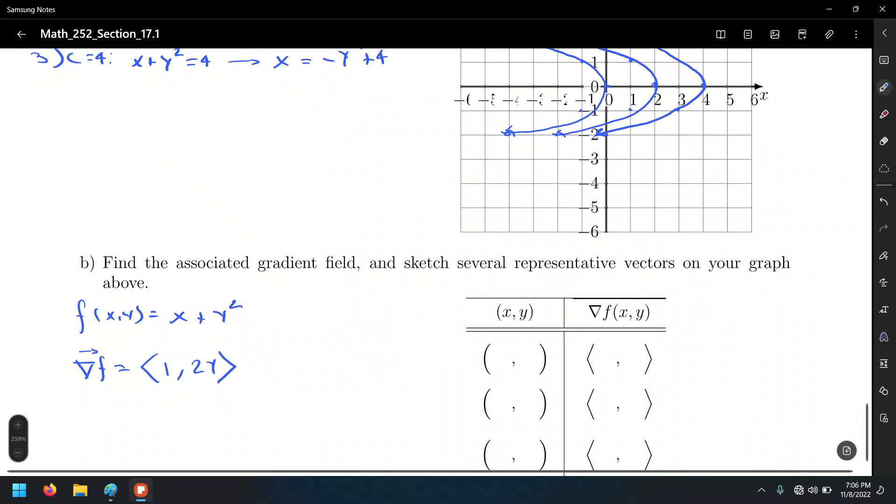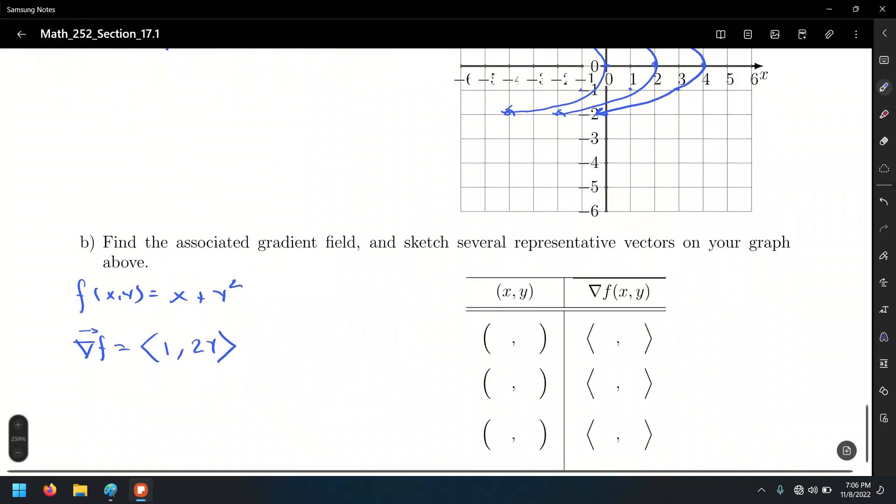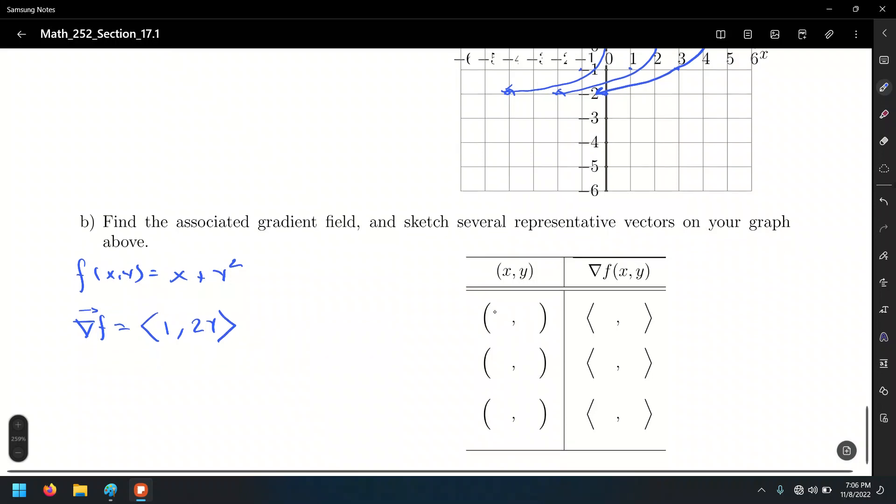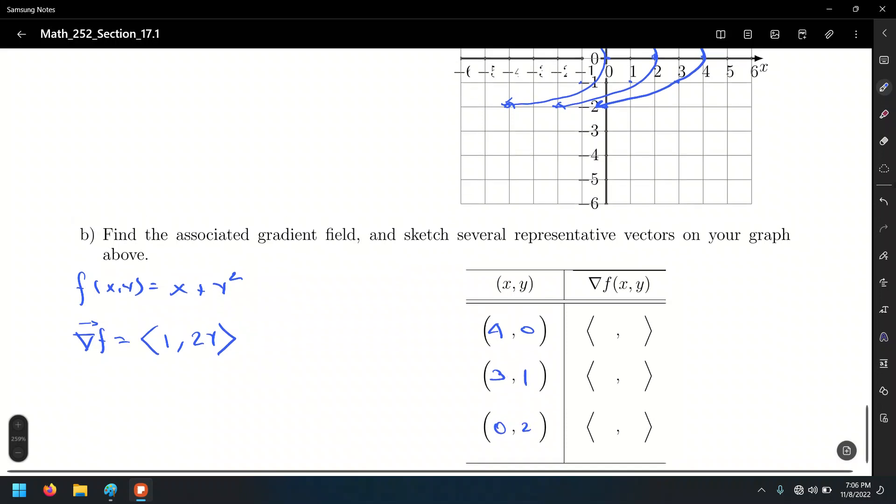And in the same way that we plotted some vectors in the previous couple of pages last time, we're going to go to some random points and create some vectors. So let's have a look. I'm going to look at the point (4, 0), (3, 1), and (0, 2). So we're going to find the associated vector to that point. And by the way, nabla of f of x, y, that's the vector field, 1, comma, 2y.